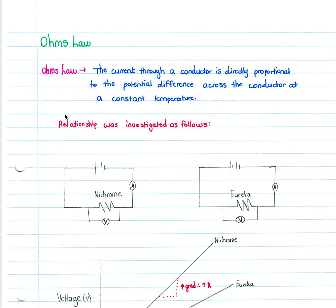Ohm's law is stated as: the current through a conductor is directly proportional to the potential difference across the conductor at a constant temperature. That constant temperature is very important — as soon as we change the temperature, our resistors are affected and Ohm's law no longer applies, so we must always apply this at a constant temperature.